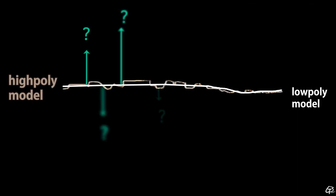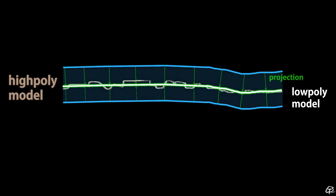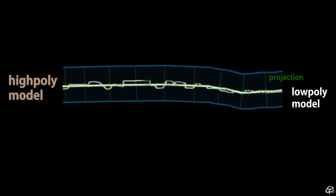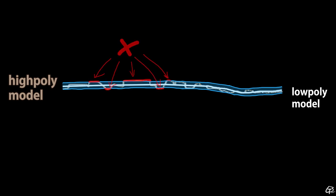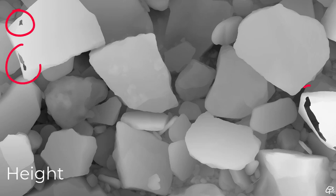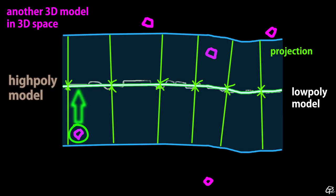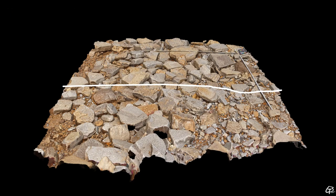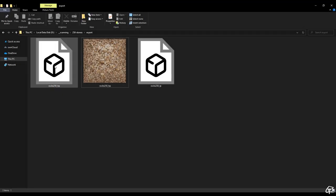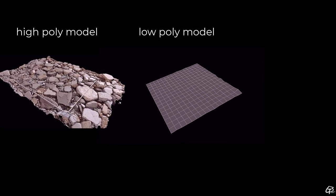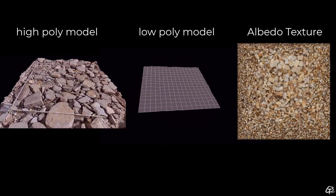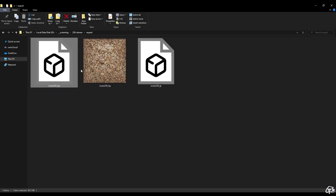Next we need to define the projection range. Some bakers calculate it automatically, some handle it within a given range, but for some the projection distance must be set fully manually. Anything outside this range won't be considered during high poly projection. If the distance is too short, the baker can clip data; if too wide, we can include random objects or lose accuracy by not filling the full dynamic range. At this stage we need 3 key things: a high poly mesh as the source, a low poly model as the canvas, and a 16-bit texture to carry albedo information.